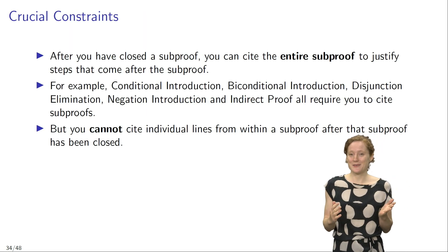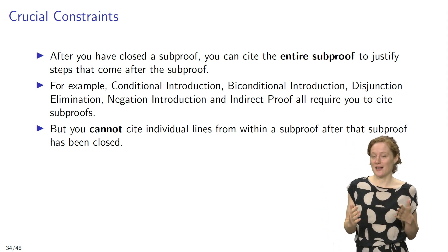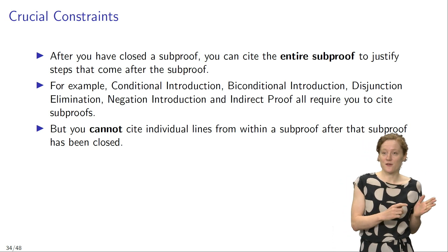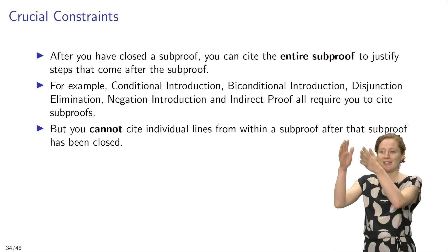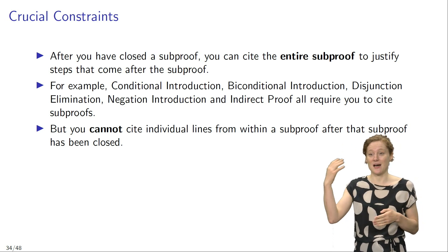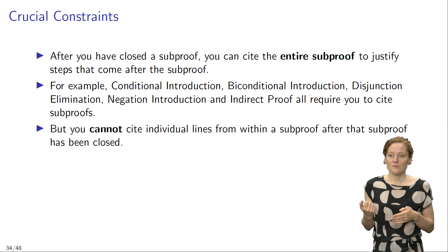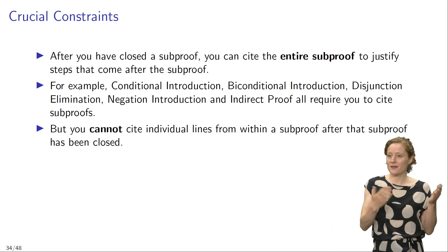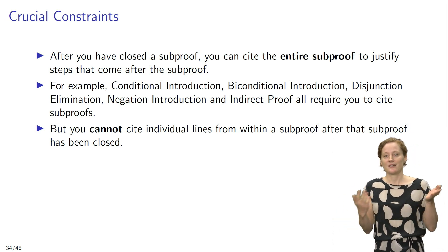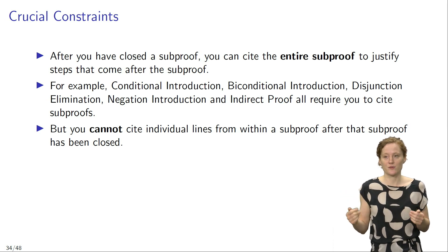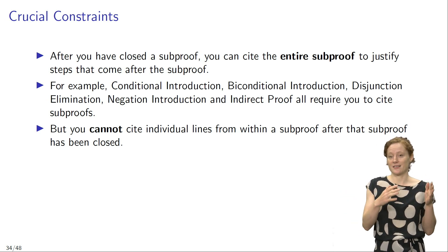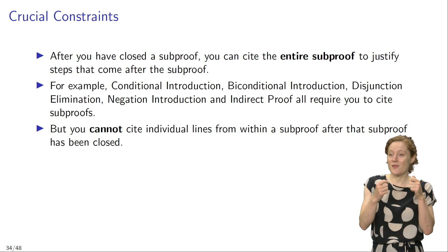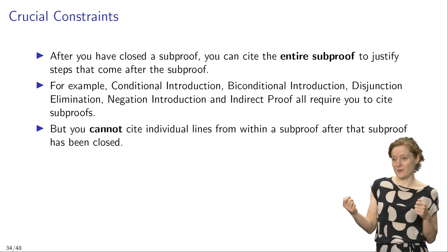To correctly make use of sub-proofs, you need to obey a couple of important constraints. The first is that after you have closed a sub-proof, you can cite the entire sub-proof to justify steps that come after it. So all the rules of inference — conditional introduction, bi-conditional introduction, disjunction elimination, negation introduction, and indirect proof — they all require you to cite entire sub-proofs. But you cannot cite individual lines from within a sub-proof after that sub-proof has been closed.